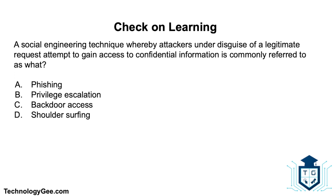Now let's do some check on learning. First question: a social engineering technique whereby attackers, under the disguise of a legitimate request, attempt to gain access to confidential information is commonly referred to as what? Is it phishing, privilege escalation, backdoor access, or shoulder surfing? The answer is phishing.